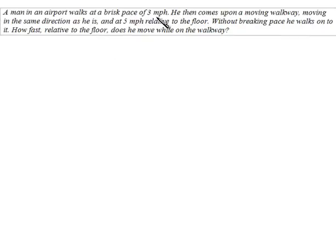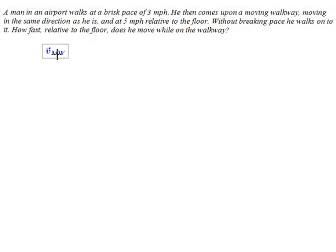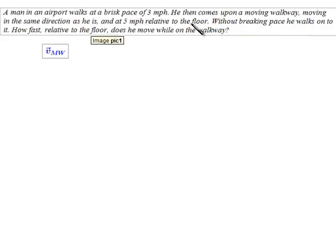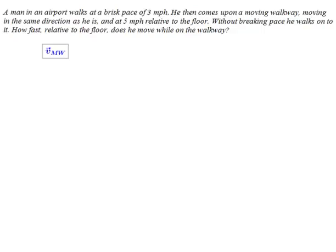At this point where they tell you he is moving at 3 miles per hour, that is his speed relative to the floor, to the ground. However, he keeps walking at this pace when he gets on the walkway, which means then that for the purposes of our problem, while on the walkway, his speed relative to the walkway is still 3 miles per hour, because he hasn't changed his speed. So we will use this to represent the velocity of the man relative to the walkway. Now they tell you that the walkway is moving at 5 miles per hour. They tell you it is relative to the floor. So this is a symbol we will use for the walkway relative to the floor. And they want to know how fast the man is moving relative to the floor. So this is what is being asked for.